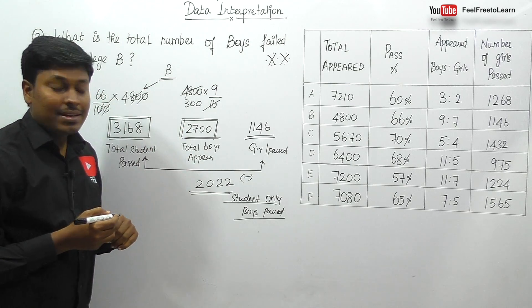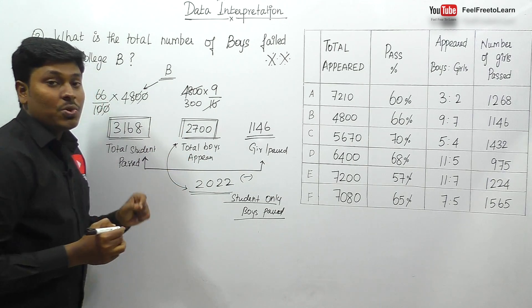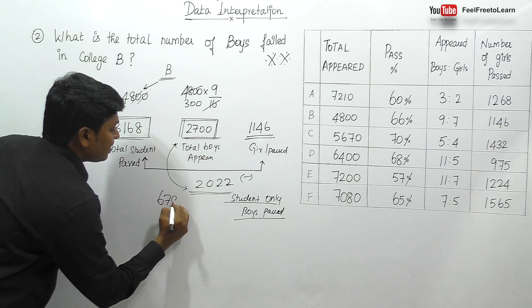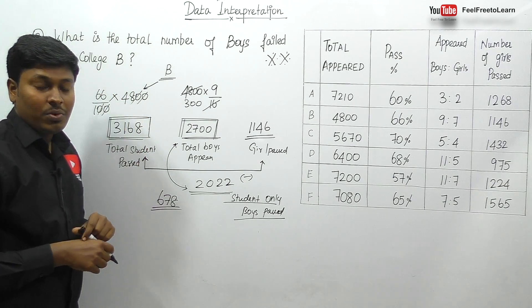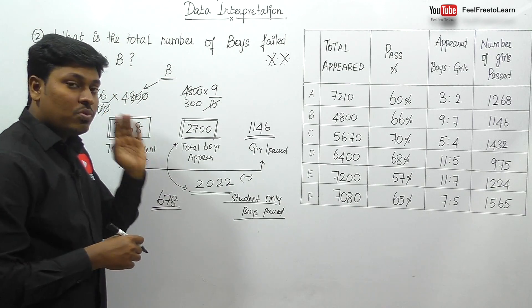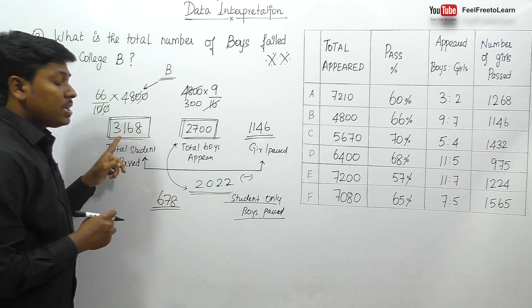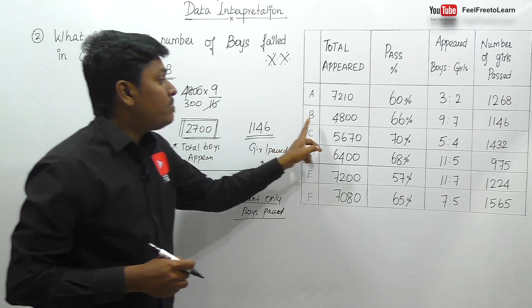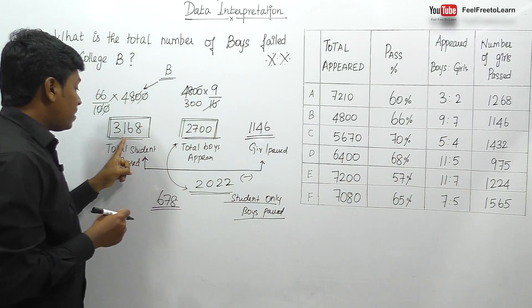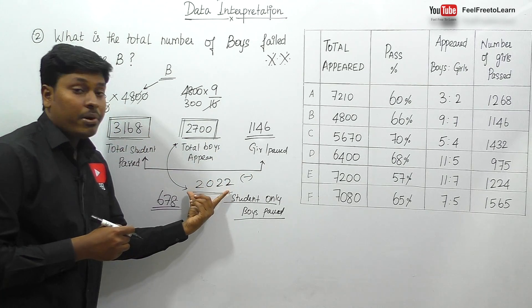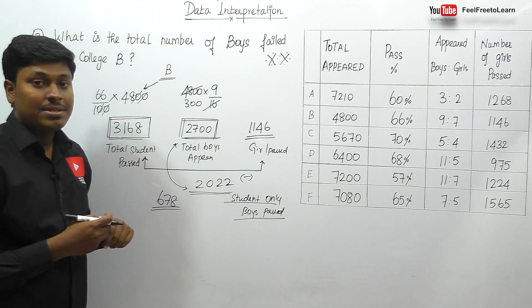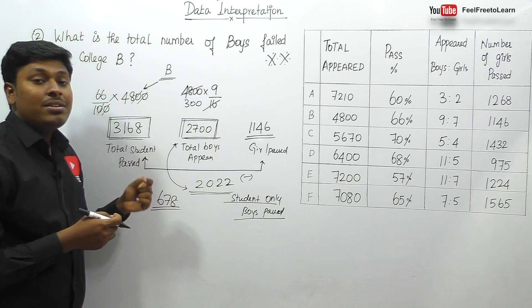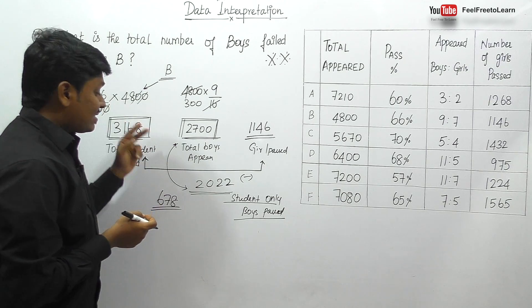We know total boys appeared is 2700 and boys passed is 2022. Subtracting: 2700 minus 2022 = 678. So 678 is the total number of boys who failed in college B. The concept is: total boys appeared minus total boys passed equals total boys failed. And we found boys passed by subtracting girls passed from total students passed.